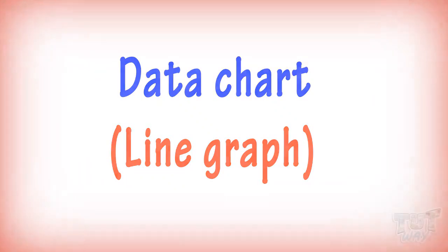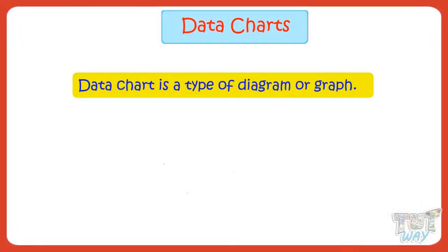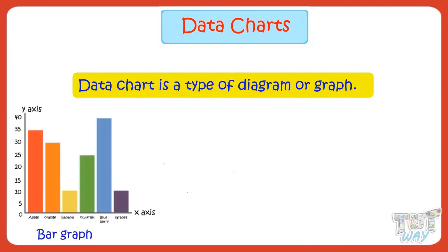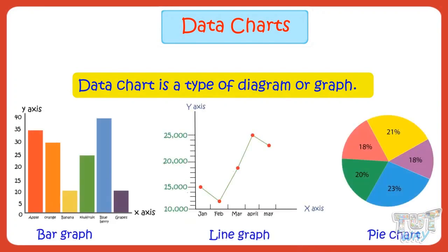First of all, a data chart is a type of diagram or graph where data is represented by various symbols. It can be bars, lines, and slices, etc. Charts make it easy to understand large quantities of data and the relationship between parts of data. Data given in the form of charts is read more quickly.